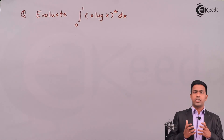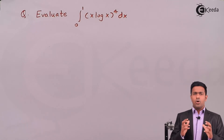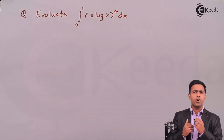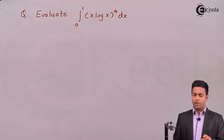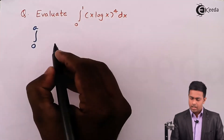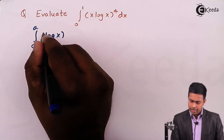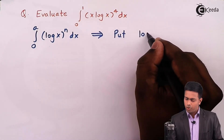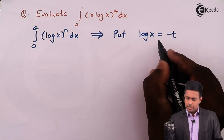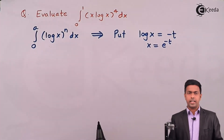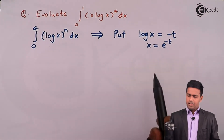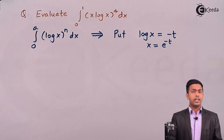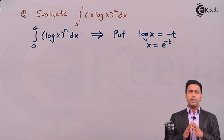I will show you the general form for such questions so you can compare any question to it and get the answer by observation. Whenever you get an integration of the form ∫₀^a (log x)^n dx, we put log x = -t. This gives x = e^(-t), and differentiating both sides gives dx in terms of an exponential. Whenever we have a log term in the integration, we substitute log x = -t to convert it into the gamma function definition.